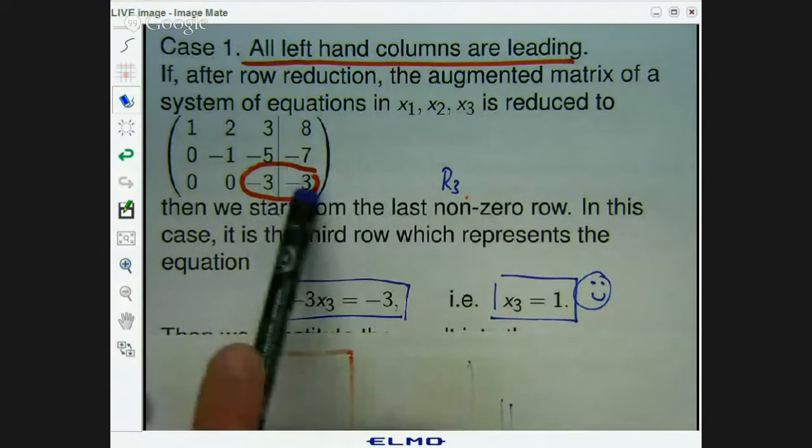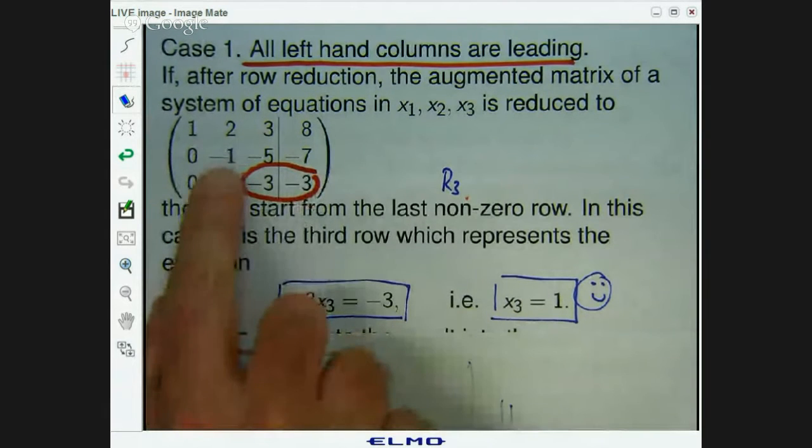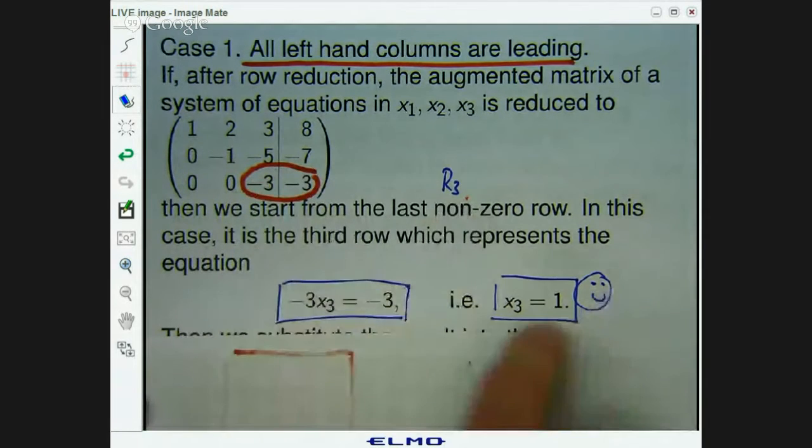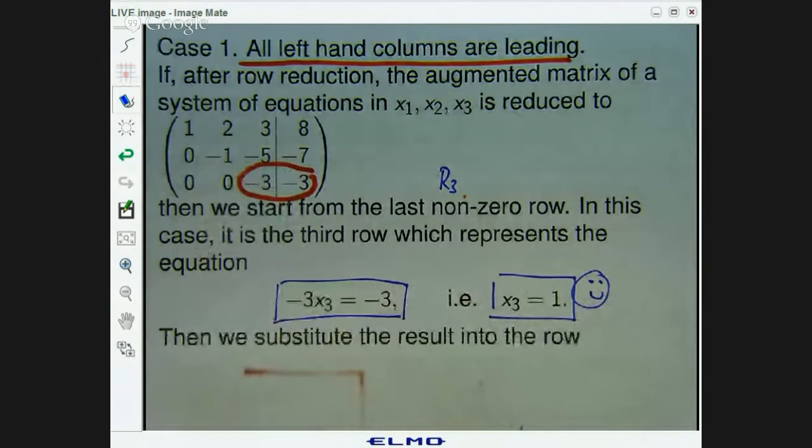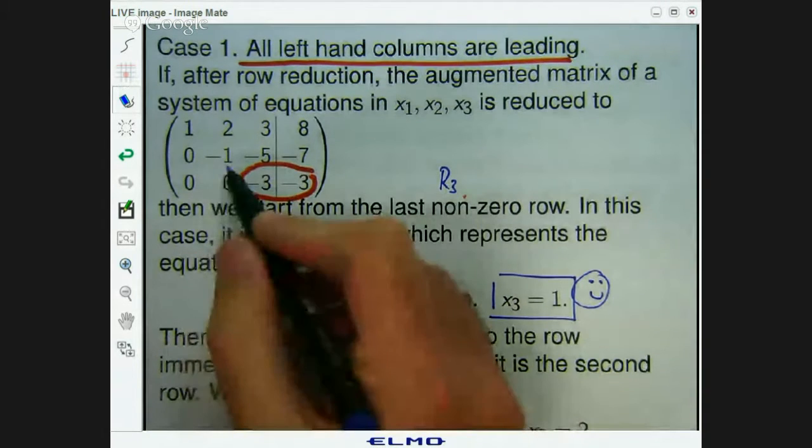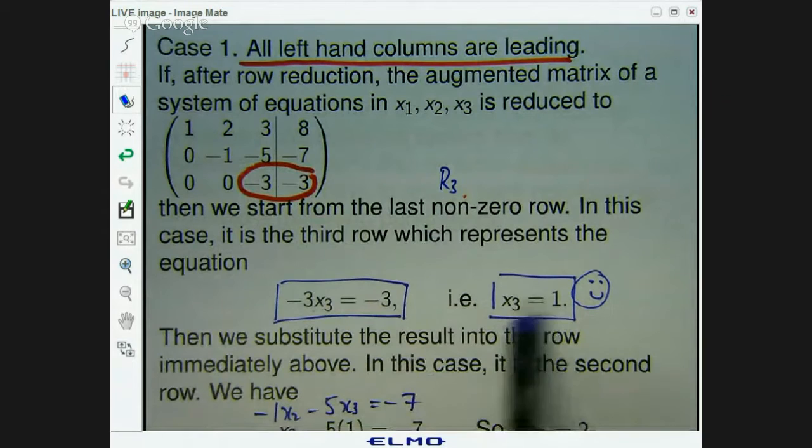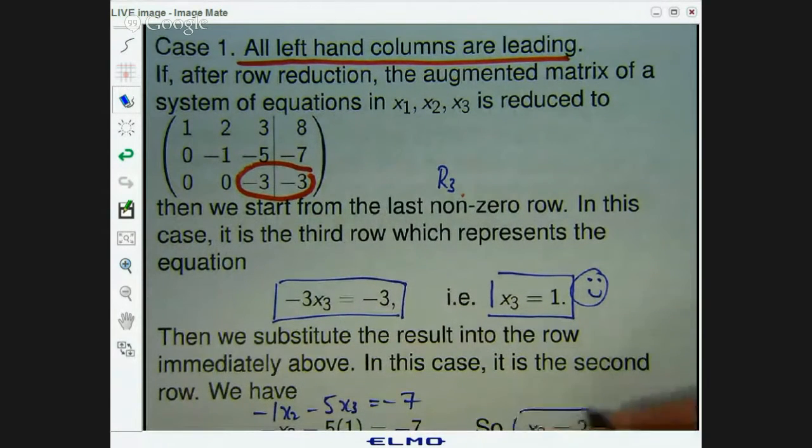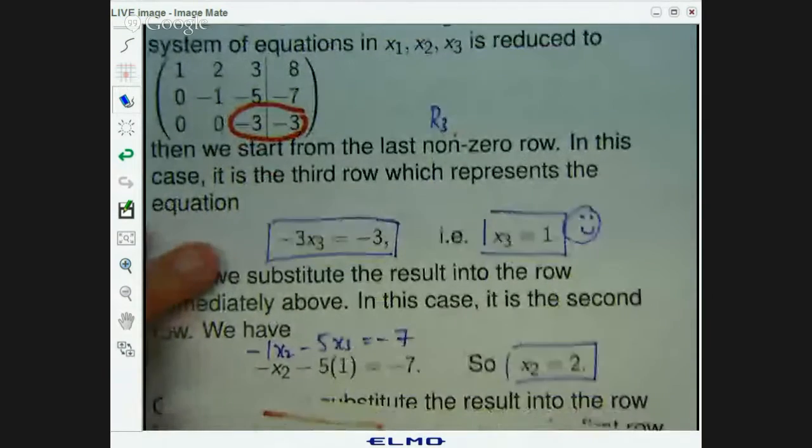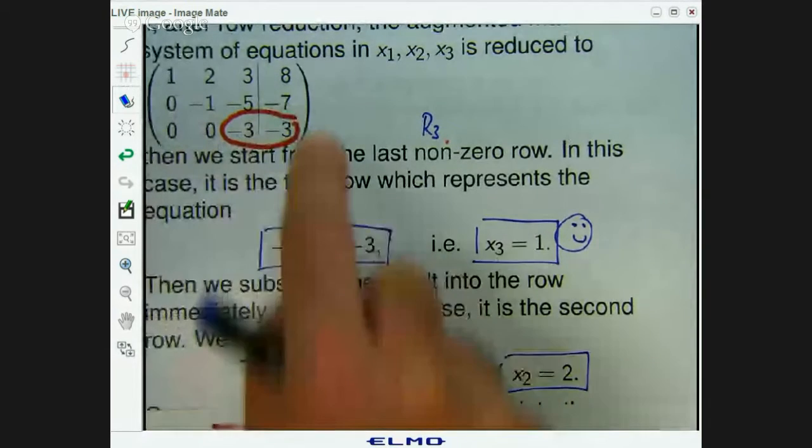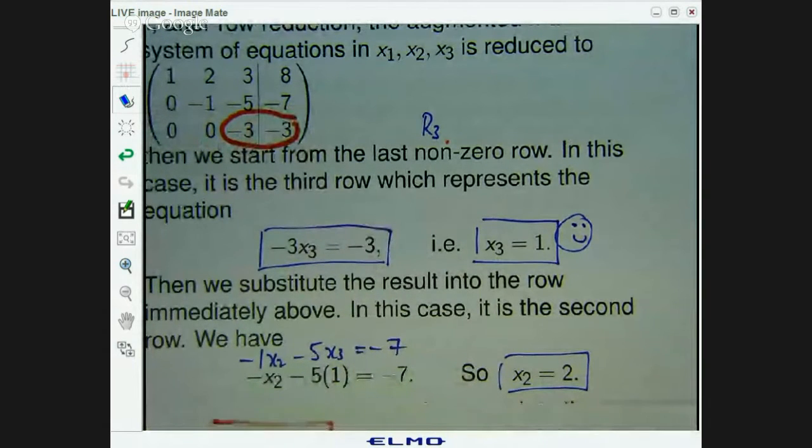So now we can use back substitution. What does the second row say? The second row says negative one x2 minus five x3 equals negative seven. Now we know what x3 is, so I can put that into here and rearrange to get x2. So this row says negative x2 minus five x3 equals negative seven and replace x3 with that and then rearrange and you get x2 equals two. So that's row two.